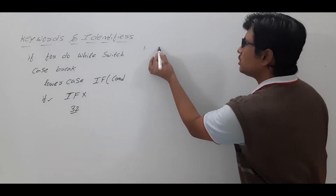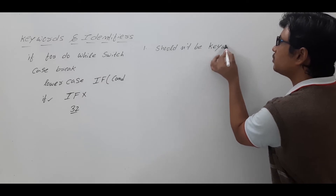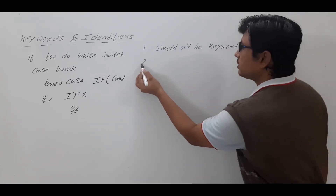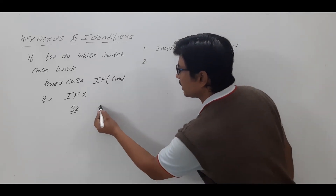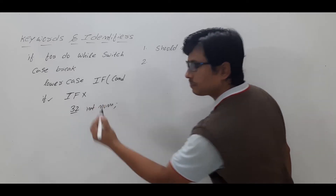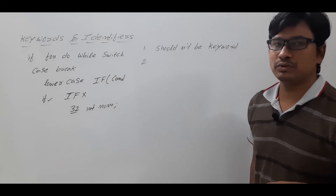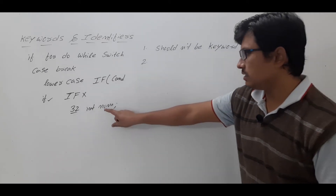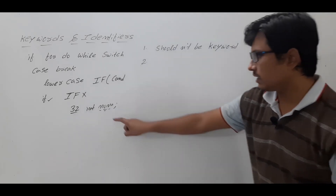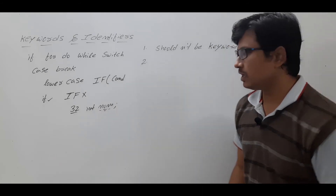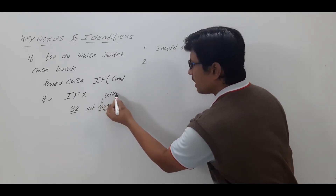The first rule is that an identifier should not be a keyword — this is a very important point. The second rule is about the first character: suppose I keep an identifier called NUM and write 'int NUM' — the first character of an identifier should always be a letter or an underscore only, not a digit. So you cannot write '1UM' because '1' is a digit. You should not use a digit as the first character of an identifier.